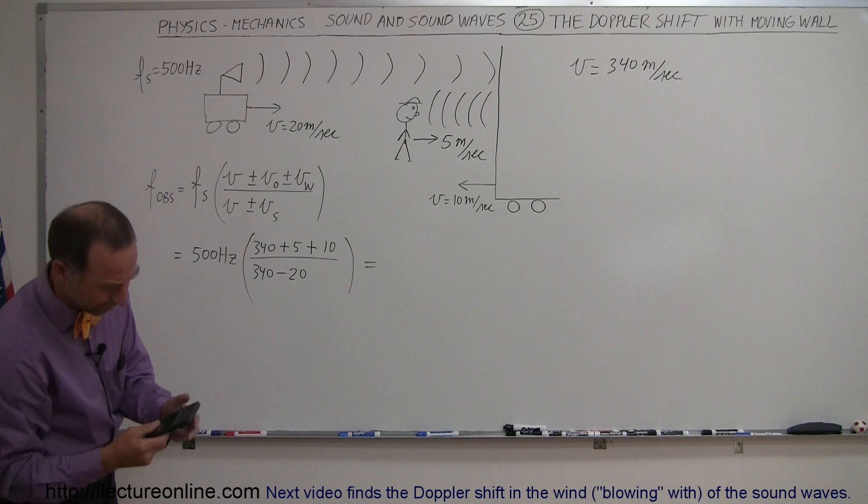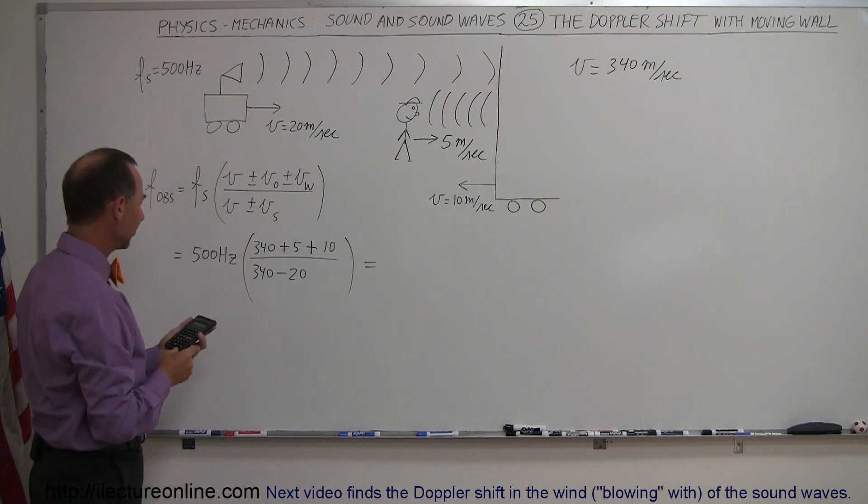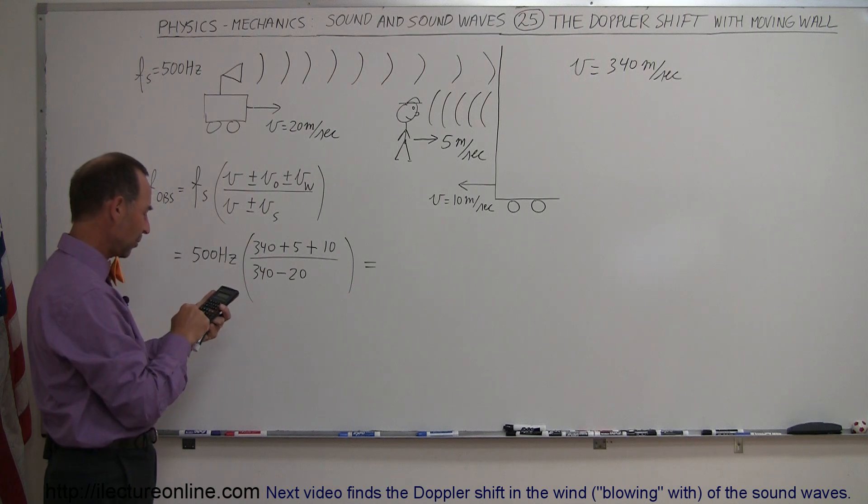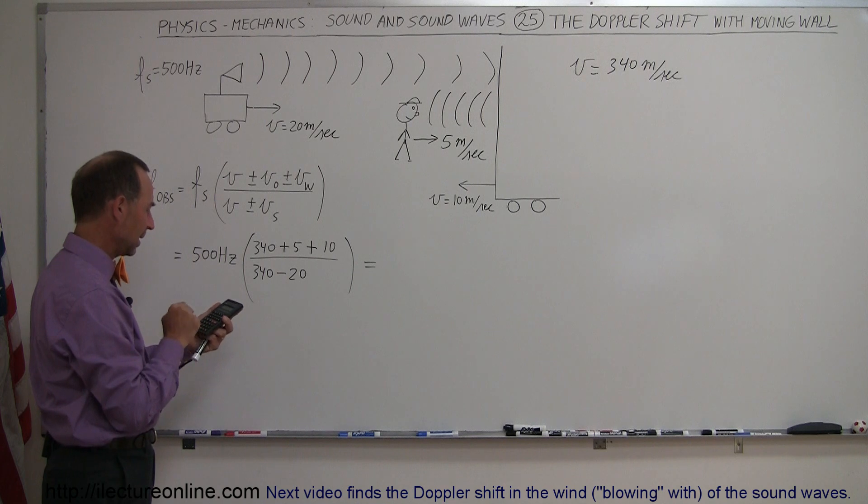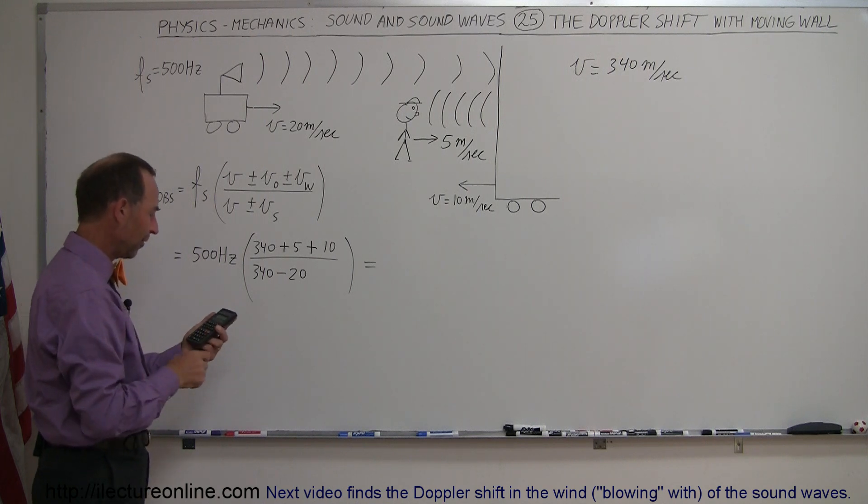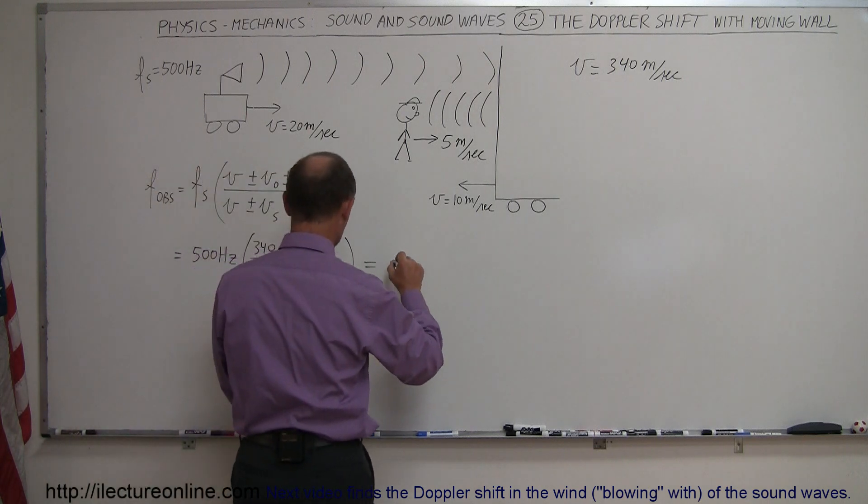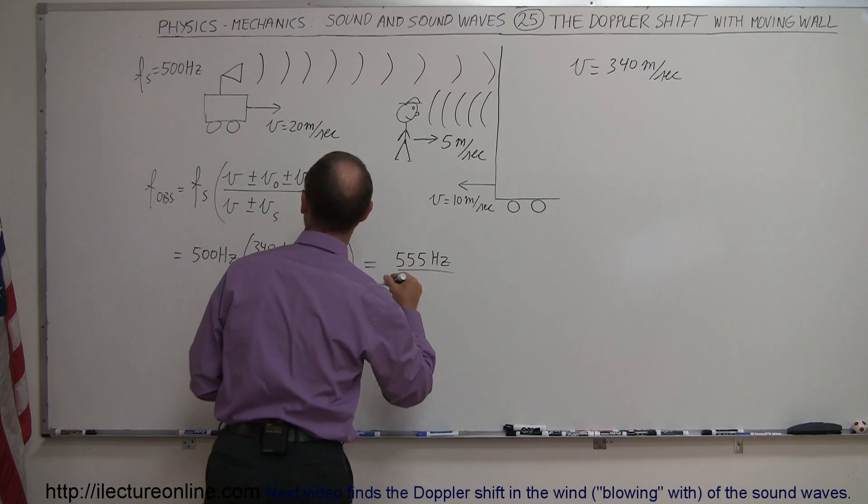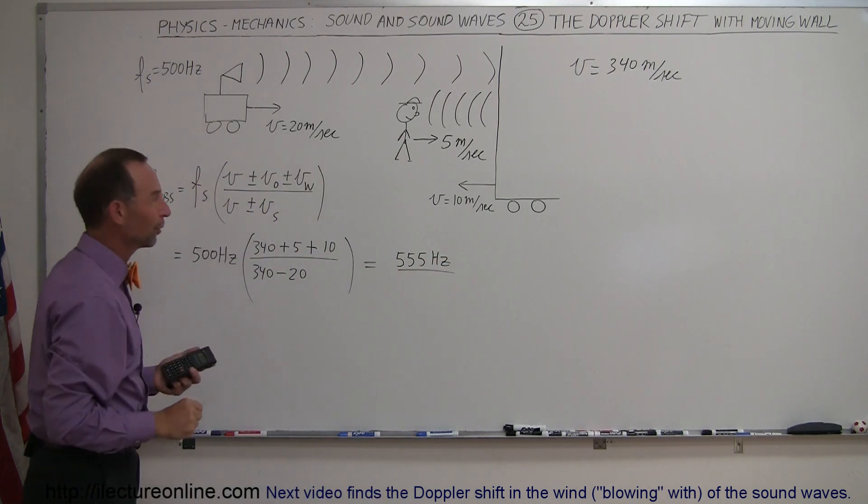And my calculator is hiding here, so let's see what this is equal to. So you have 340 plus 15, that would be 355, divided by 340 minus 20, which is 320, and we multiply it times 500. And so finally, the frequency observed by the observer would be 555 hertz.